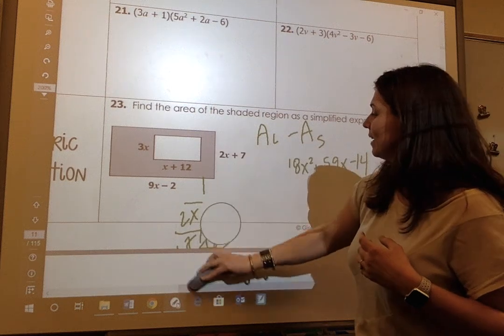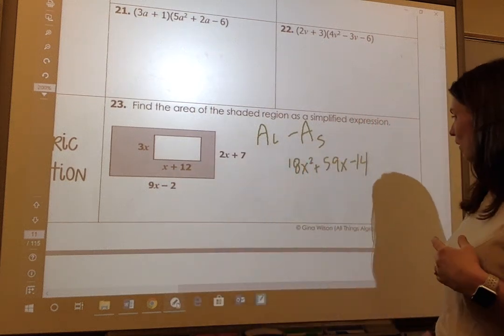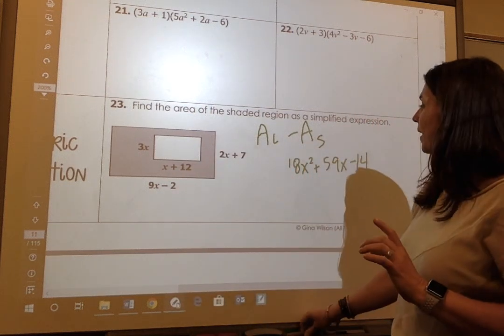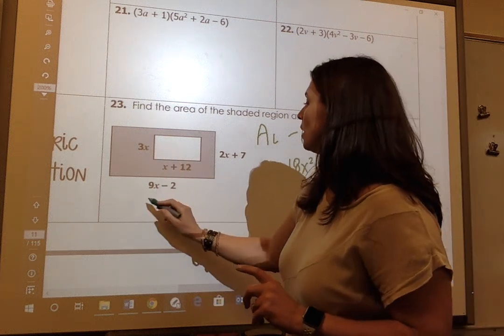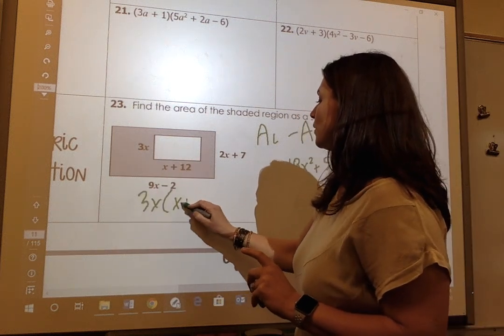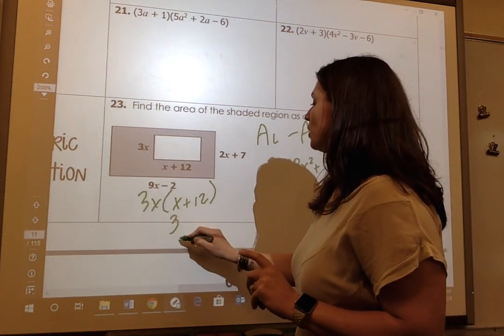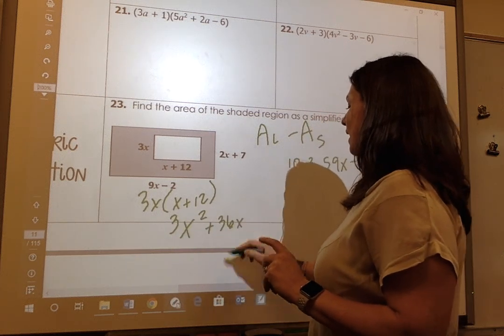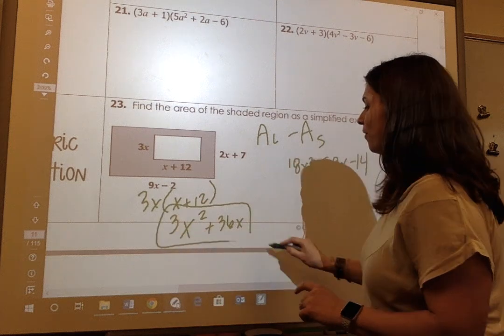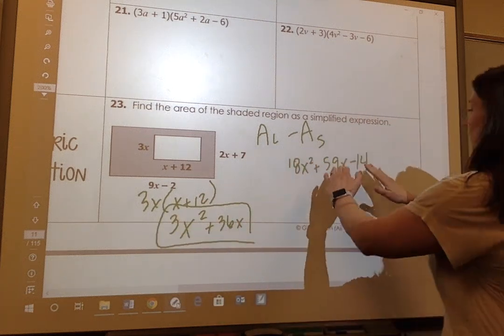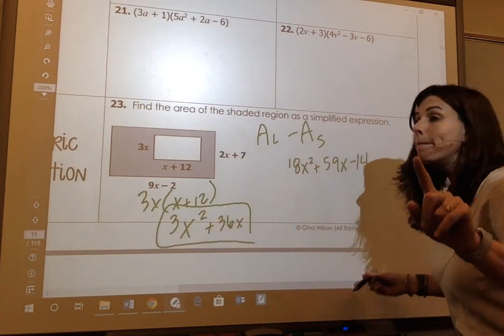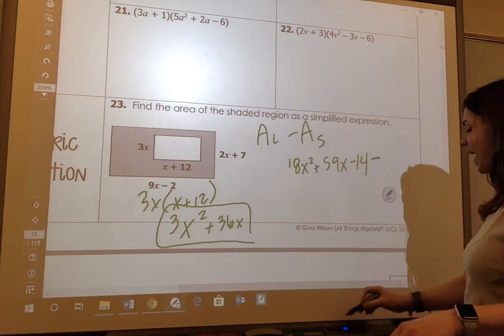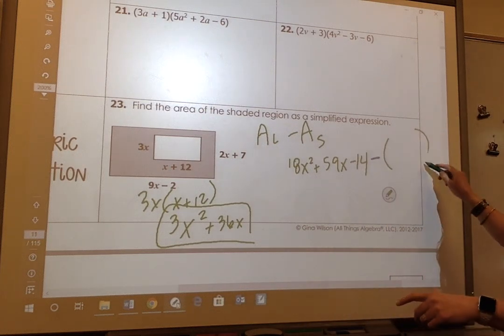So I'm going to erase that. That's the area of my large. The area of my small is 3x times x plus 12. So when I multiply them or distribute, I get 3x squared plus 36x. That's the area of my small.